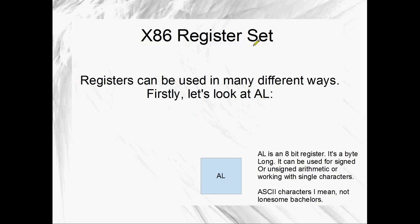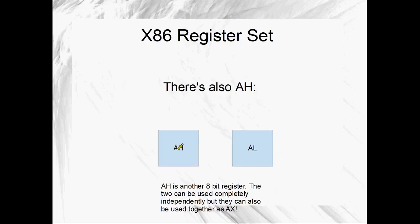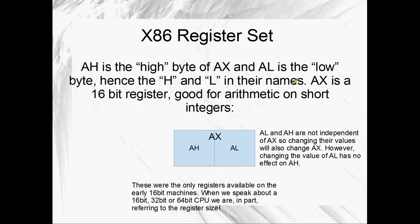This is how they work - the x86 register set. Registers can be used in many different ways. AL is one of the x86 registers and it's 8 bits wide, which means it's a byte. It can be used for signed or unsigned arithmetic, and it's for working with single characters. Another register is AH, also an 8-bit register. AH and AL are both called that because both of them joined together make AX. AH is the high byte of AX and AL is the low byte - hence the H and the L.